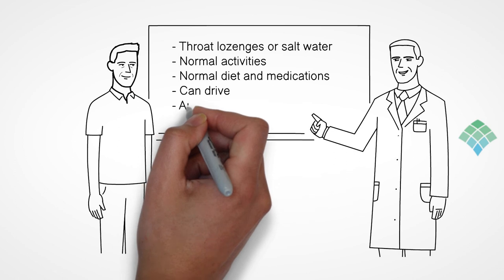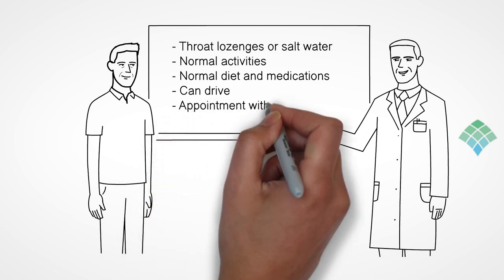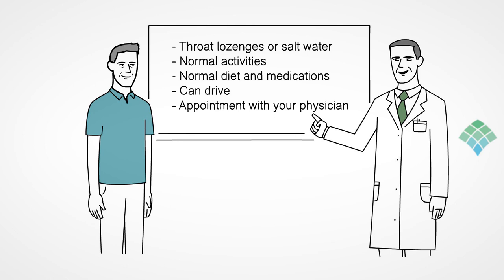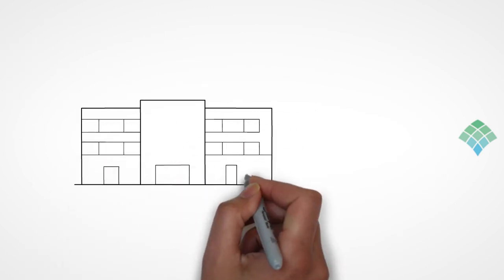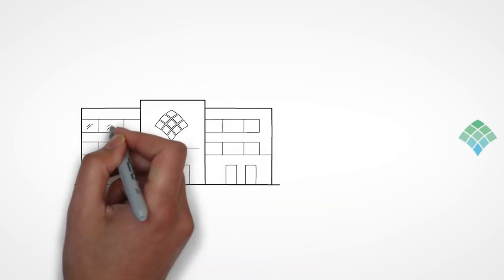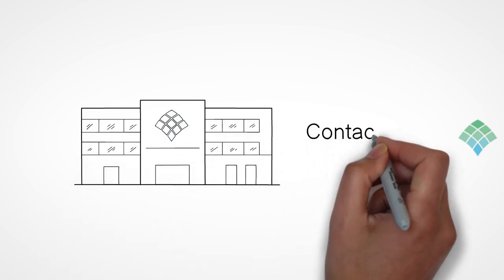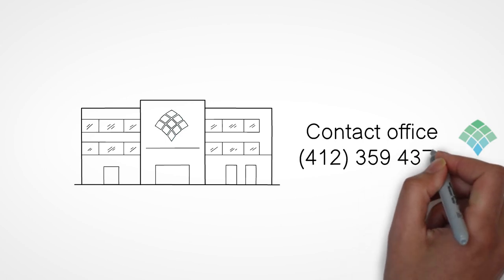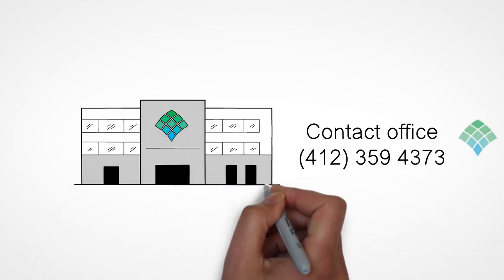A follow-up appointment typically is scheduled two weeks later with your physician to review the results of your study and establish a plan of care. As with any testing, if you experience any unusual symptoms or side effects after a manometry, contact our office at 412-359-4373 or go to the emergency room immediately.